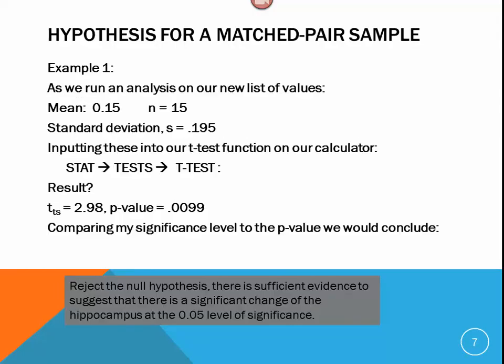Going back to our slide presentation, now we just need to interpret this. As we run this analysis, we see the mean is 0.15, n equals 15, and our standard deviation was 0.195. You could have inputted those directly into your t-test or pulled it automatically from data. With our test statistic of 2.98, which is a p-value of 0.0099, we would compare this to the significance level of the test, which is 0.05. Being that 0.0099, my p-value, is less than 0.05, that suggests we want to reject the null hypothesis. We have just shown that there is sufficient evidence to suggest that there is a significant change in the hippocampus at the 0.05 level of significance.